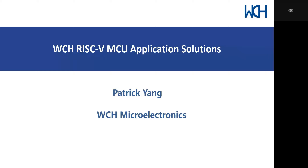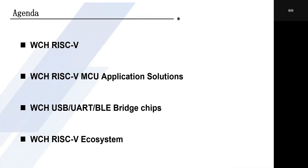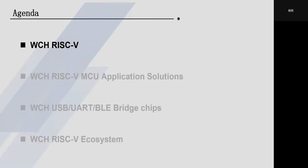As you guys know, I tweet about our RISC-V MCU solutions almost every week. My talk has four parts today. In the first chapter I will talk about the development trend of RISC-V and WCH RISC-V self-developed genes. The second chapter covers RISC-V MCU application solutions. The third chapter covers the bridge chips of WCH USB-UART-BLE, which can make RISC-V development and chip interaction more convenient.